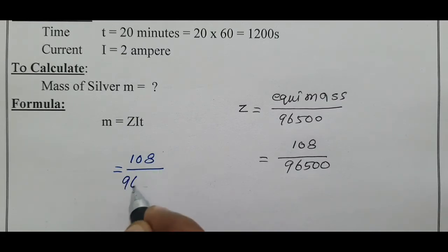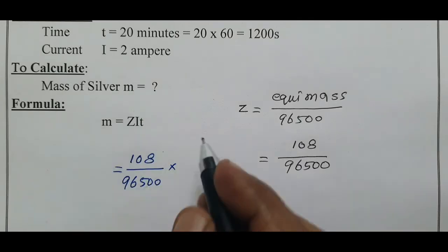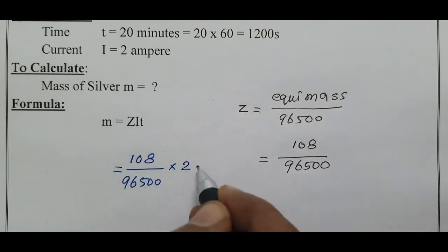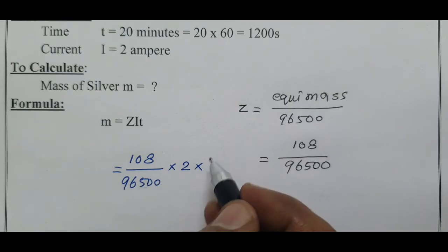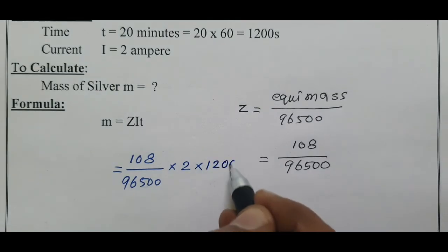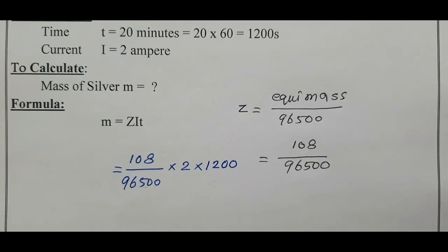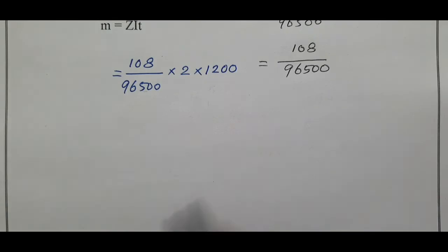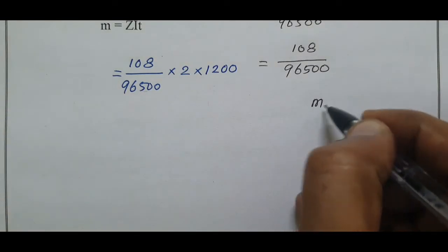And i is 2 ampere, and time is 1200 seconds. How to convert the unit, how to cancel the unit? We know the formula m = Zit.